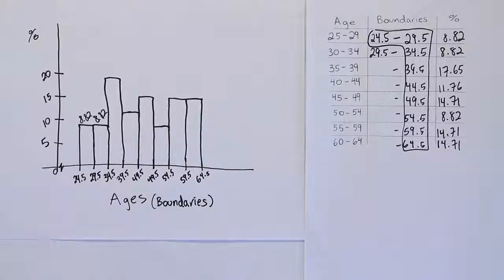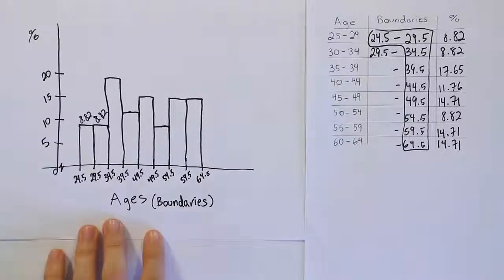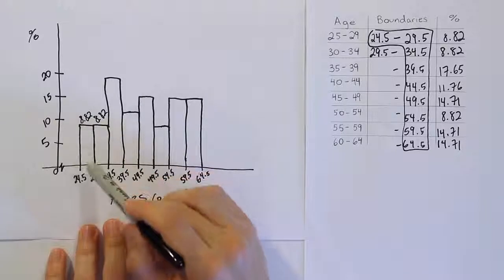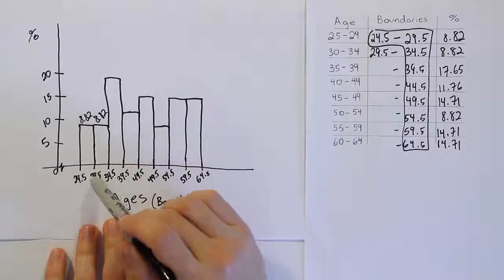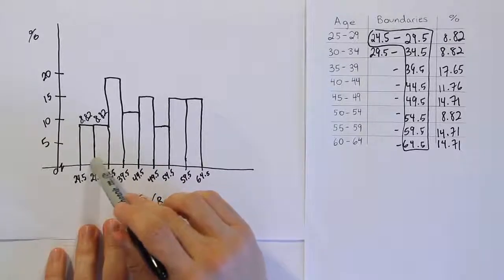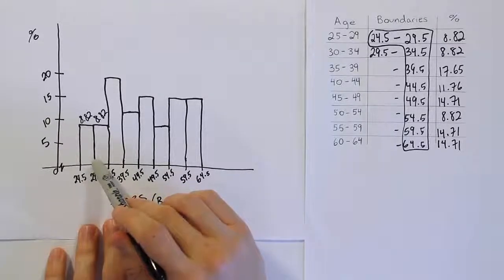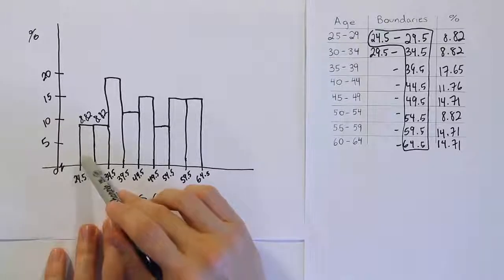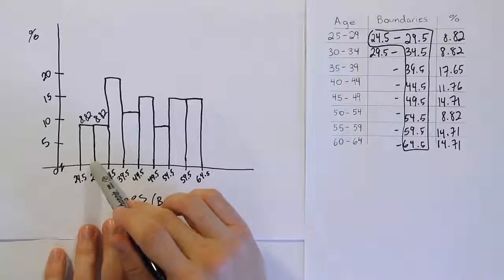One last thing I want to mention - when you're looking at a graph like this, there's something called the left endpoint convention. That convention simply states that when you look at this rectangle, since they do share a side and you might ask is 29.5 part of this rectangle or this rectangle, the left endpoint convention says that the left endpoint is part of the rectangle, but the right endpoint is not.